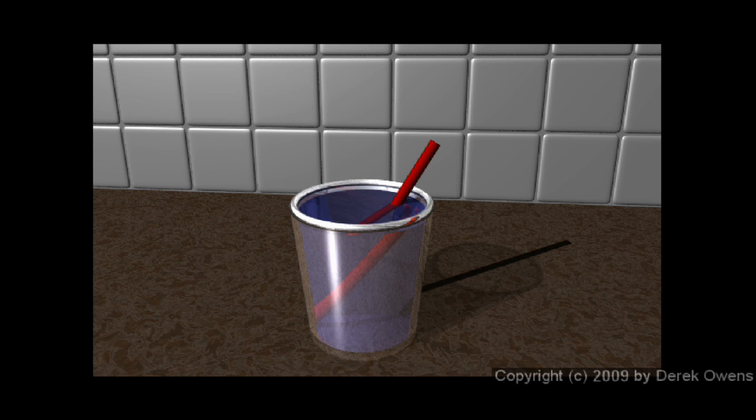When you look at this straw, your line of sight goes through the water to see the straw there, or through the glass to see the straw there. And in either case, that light is coming from that part of the straw through the water or the glass and into your eye. And when light travels from one material to another, it often bends like that. And the bending of light when it travels from one material to another is called refraction.